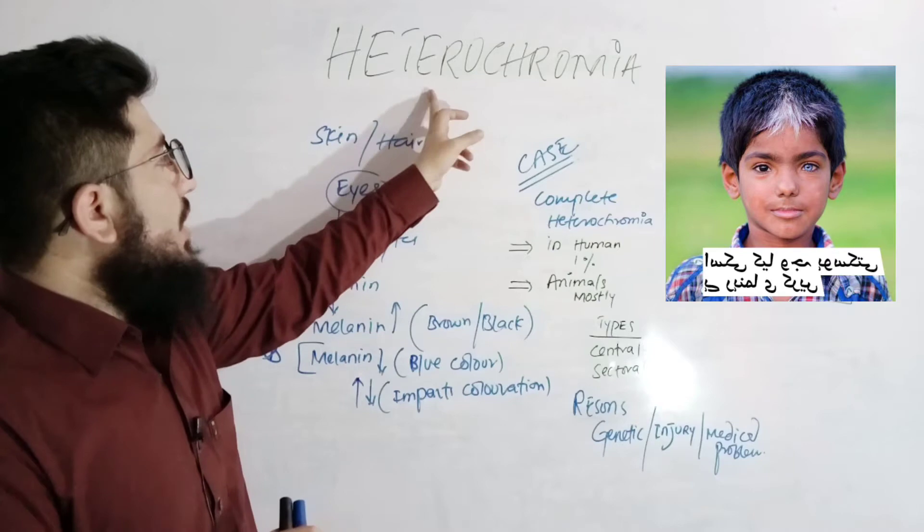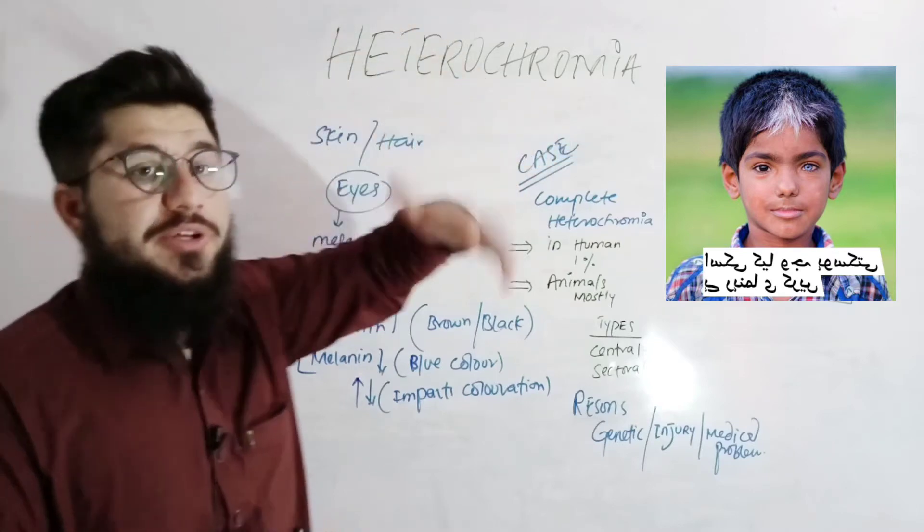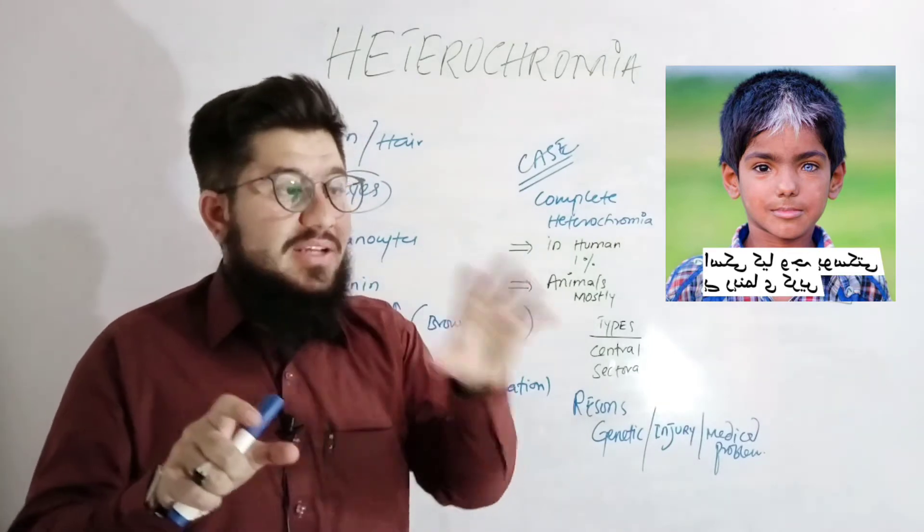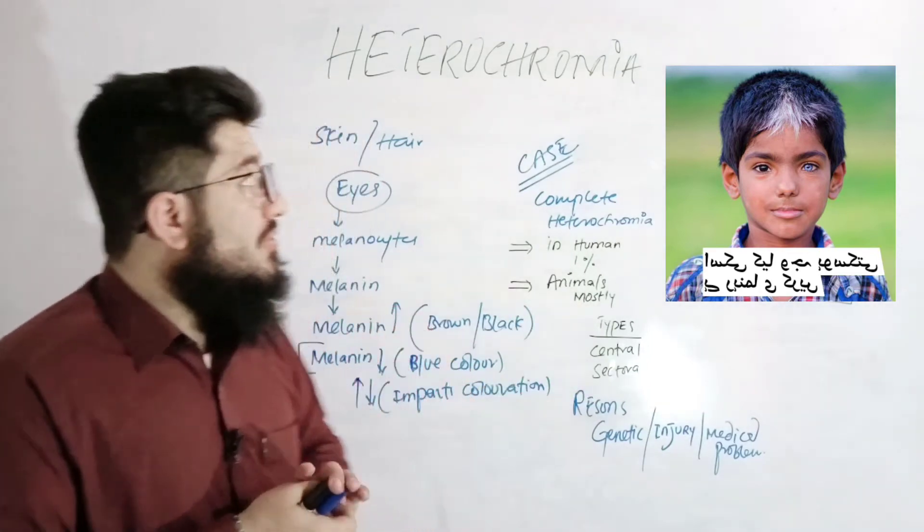There is the term heterochromia, and heterochromia are actually two words. Hetero means other or different, chromia means or stands for color. Different color or other color. So now what do we mean by this?